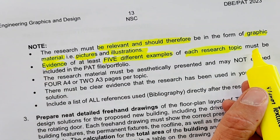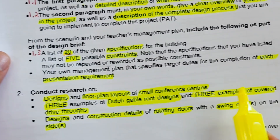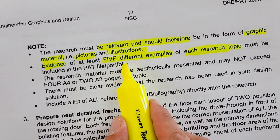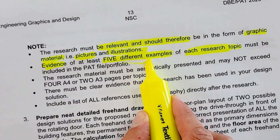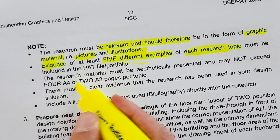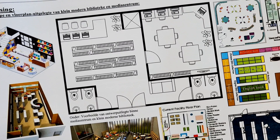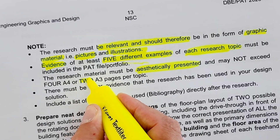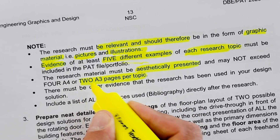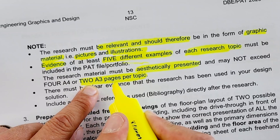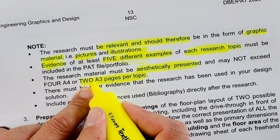Now, they ask for three examples of Dutch gable roofs and three of covered driveways — so it's not five in that instance — but five in general for your floor plan layouts, small conference centers, roofing, rotating doors, etc. The research material must be aesthetically presented and may not exceed four A4 or two A3 pages per topic. My guide is at least one A3 page per topic, but no more than two pages per topic.